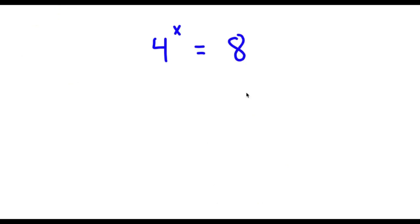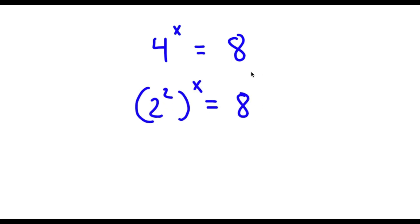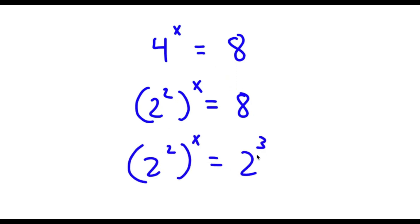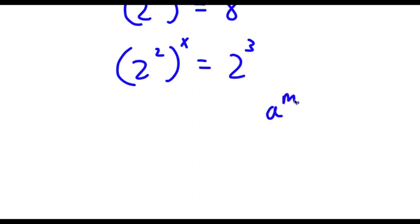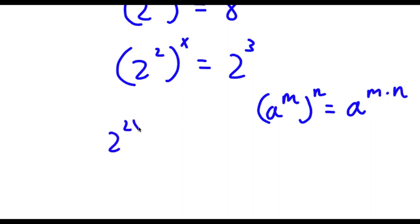Alright, so I have 4 to the power of x is equal to 8. To solve this, first off 4 is the same thing as 2 squared. So I have 2 squared to the power of x equals 8. Now 8 is the same thing as 2 to the power of 3. Using the rule a to the power of m to the power of n equals a to the power of m times n, I get 2 to the power of 2x equals 2 to the power of 3.